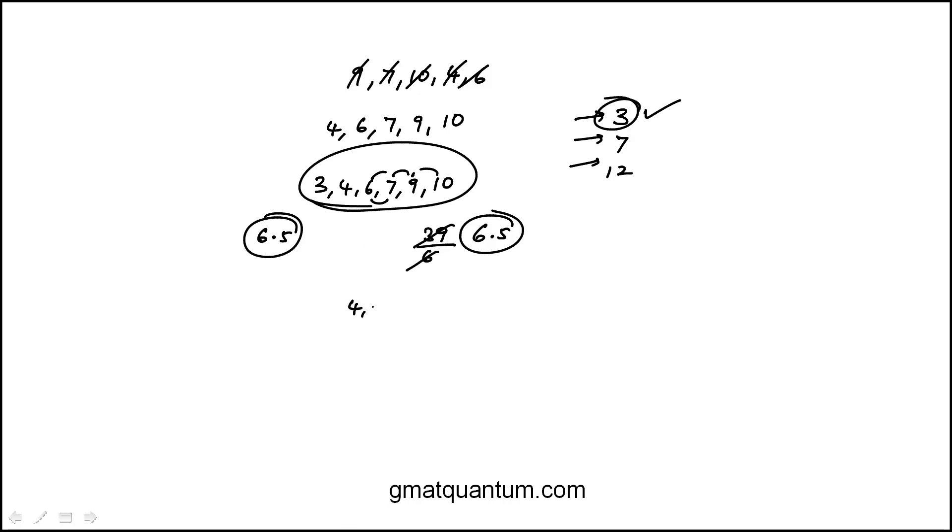And if you go to 7, it would be 4, 6, 7, 7, 9, 10. Median is 7, average of the middle two, they're both 7.